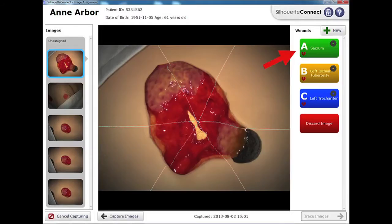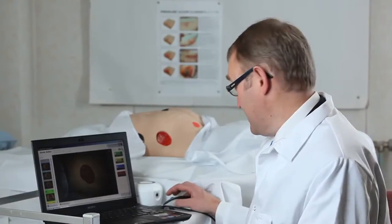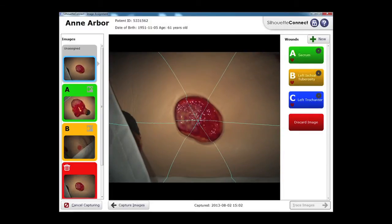Now that we have captured the images, we are ready to assign them to the wounds in the system. So the first image is wound A. The second image is wound B. And now we have three images of wound C. So I am actually going to delete the first two and keep the third one as wound C.